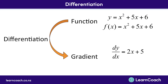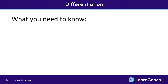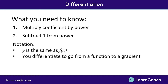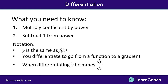If you were given f of x equals x squared plus 5x plus 6, you would write f dash x — the dash means you've differentiated it — and it gives the same answer. To summarise: when differentiating, multiply the coefficient by the power, then subtract 1 from the power. Also remember, y and f of x mean the same thing. Differentiating y gives dy by dx; differentiating f of x gives f dash x. You're going from a function to finding a gradient.